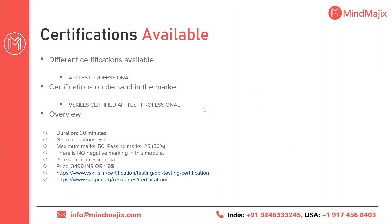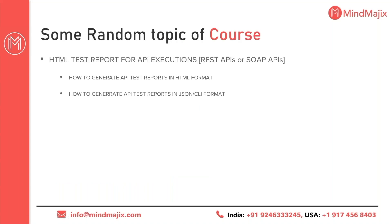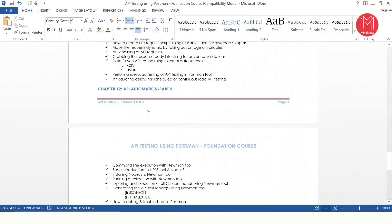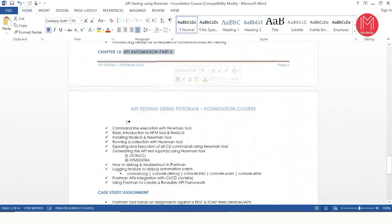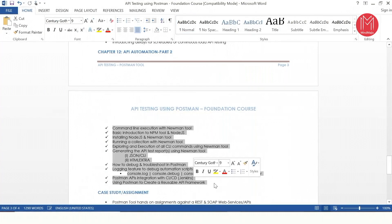From the MindMagic side, when you complete a course with us we give you a participation certificate and a completion certificate stating you have successfully completed the API Testing using Postman course from MindMagic. We do this with every participant who joins us and completes a course. Now let me show you the practical execution part — HTML Test Report for API Execution, which is Chapter 12, API Automation Part 2. Let me do that right now.